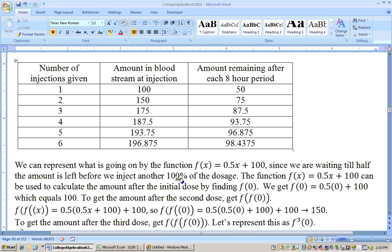How do we represent this with a composition of function? The amount in your bloodstream can be represented with the function 0.5x plus 100. At the very start, f(0) equals 0.5 times 0 plus 100, which is 100. Put that 100 back into this function: f(100) is 0.5 times 100, which is 50, plus 100 is 150. That tells me how much after two injections. Put the 150 back into the function to get the amount after three injections. You keep on plugging your answer back into itself, and that's called recursion.